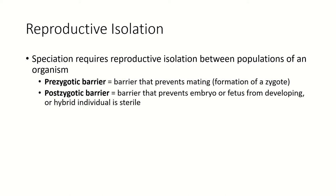A prezygotic barrier is before the formation of a zygote — a zygote is a fertilized egg — so that's something that prevents mating or prevents the fertilization of that egg. A postzygotic barrier is something that prevents that embryo or fetus from developing, or something that makes the hybrid individual sterile.